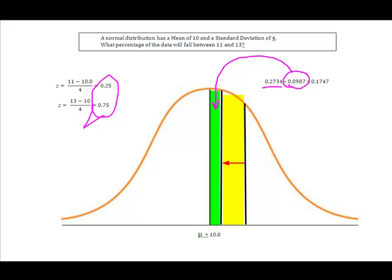And so when I take the entire distance, which was from here all the way down, of 0.2734, I subtract out this little green area. It gives me the remaining area of 0.1747, or what it tells me is the percentage of data that will fall between 11 and 13 is 17.47%.